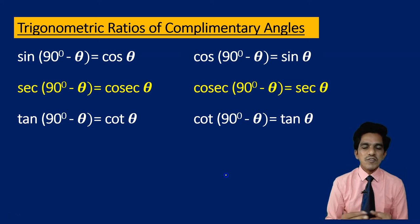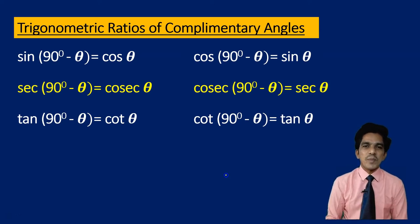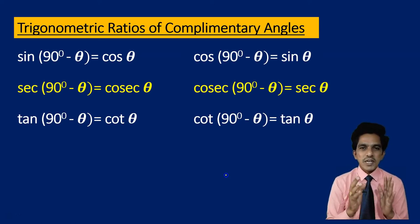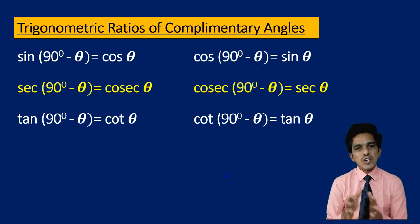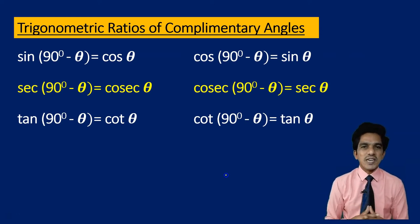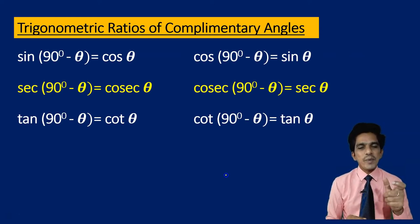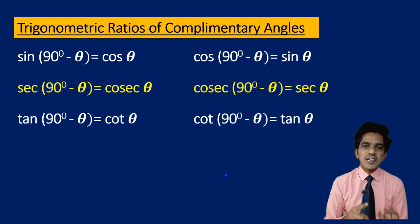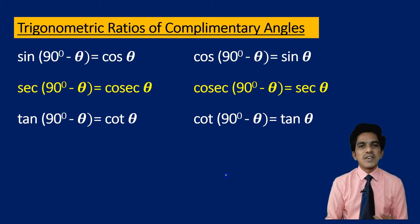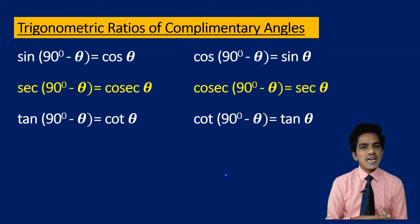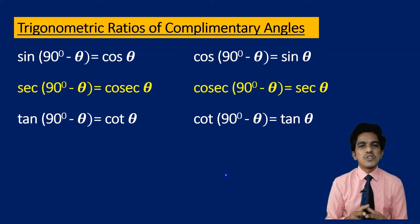Secant and cosecant are also complementary angles of trigonometric ratios.